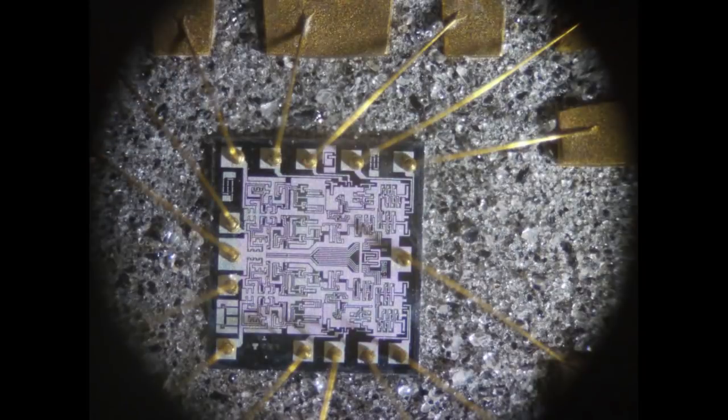And sure enough, the bond wires are all intact. Everything looks okay. The die is visible and you can clearly see what's on the die.